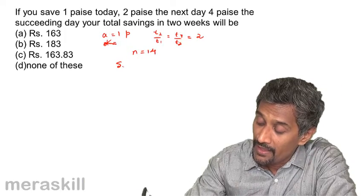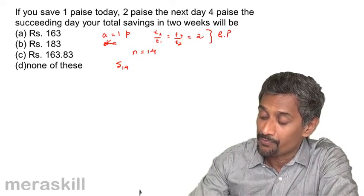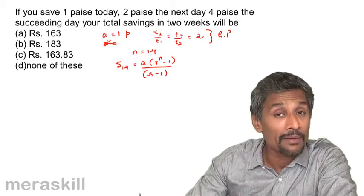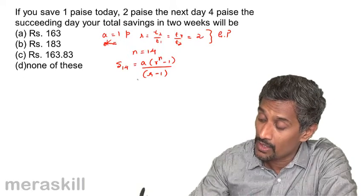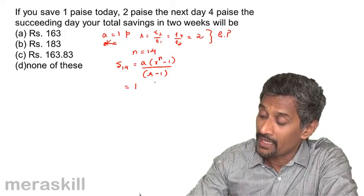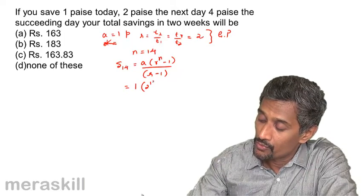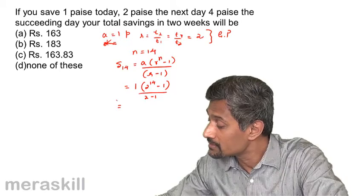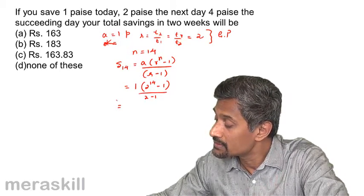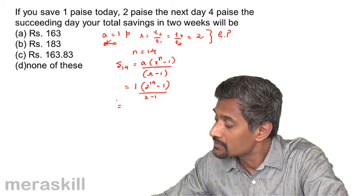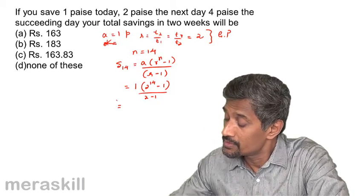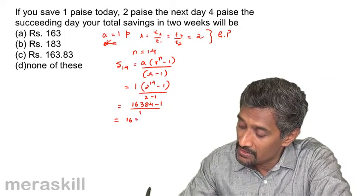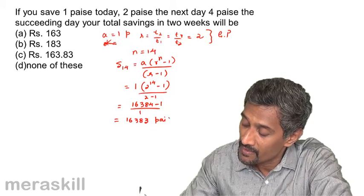We need to find S₁₄. For a GP, the formula is S_n = a(r^n − 1)/(r − 1), used because r > 1. With a = 1 and r = 2: S₁₄ = (2¹⁴ − 1)/(2 − 1) = 2¹⁴ − 1 = 16,384 − 1 = 16,383 paise.